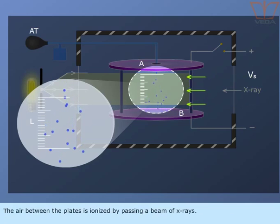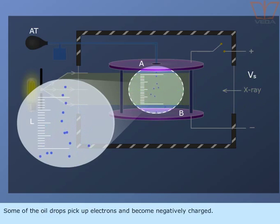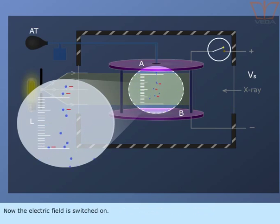The air between the plates is ionized by passing a beam of x-rays. Some of the oil drops pick up electrons and become negatively charged. Now the electric field is switched on.